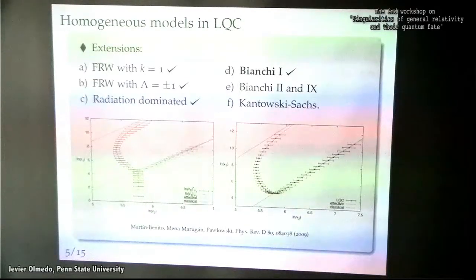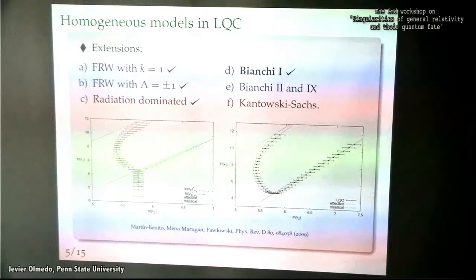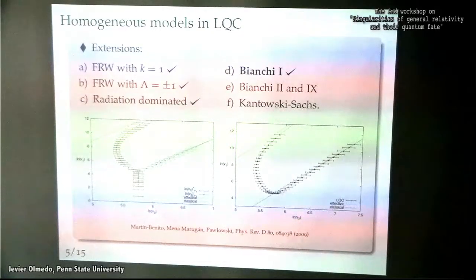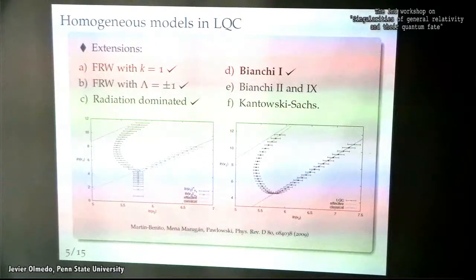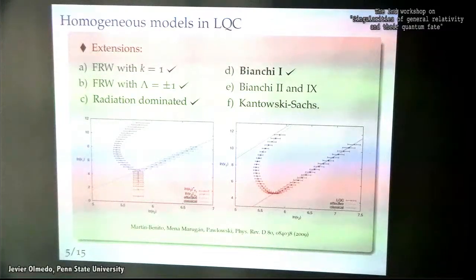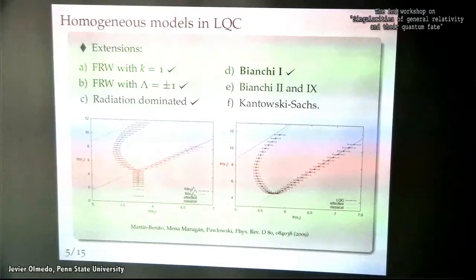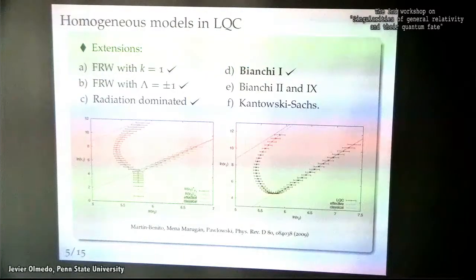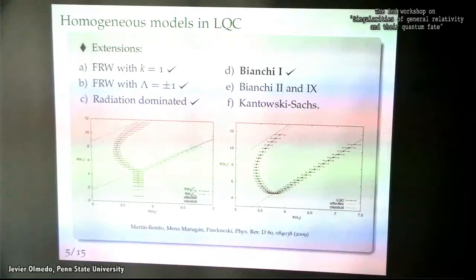I want to spend a little time on this, because it will be relevant later. In a particular model studied in a specific paper, one can completely solve the quantum dynamics of the system. In the right plot, you can choose a physical clock that is essentially one of the connections or scale factors of the model. This physical clock is a monotonic function, especially in the region where quantum effects are important and you have several bounces of the different scale factors.